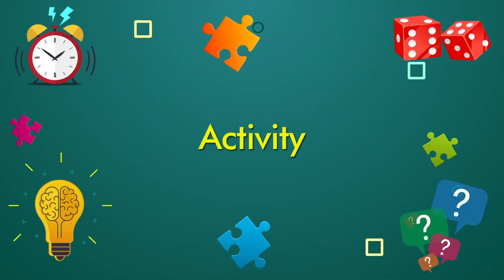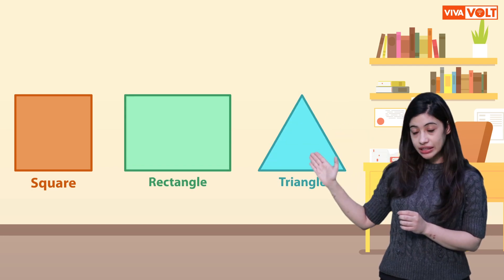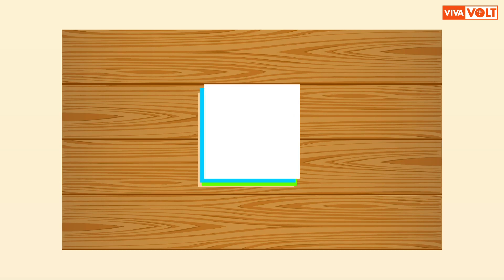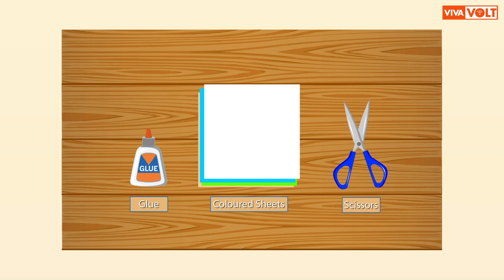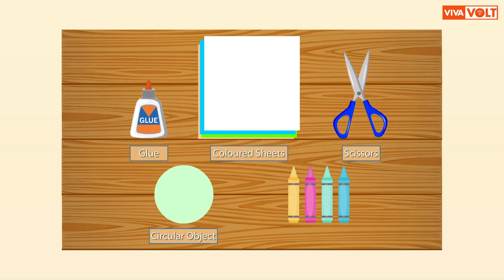Now it's time for an activity. We will learn to form different shapes such as square, rectangle, triangle, circle and oval. We will need colored sheet, square shape, glue, pair of scissors, any small circular object and colors.